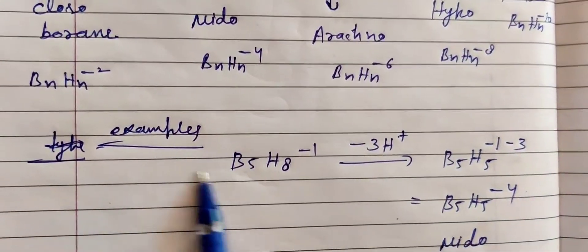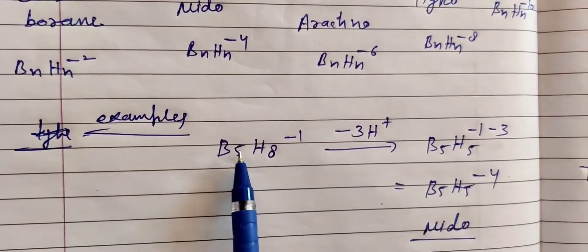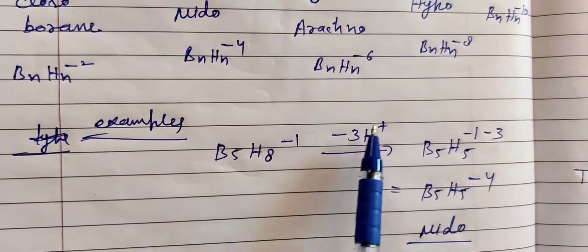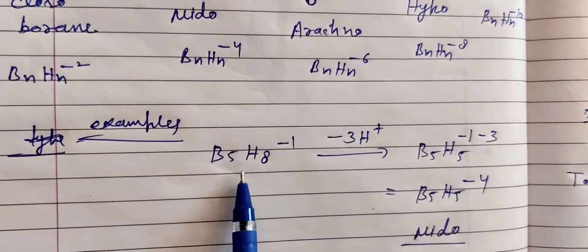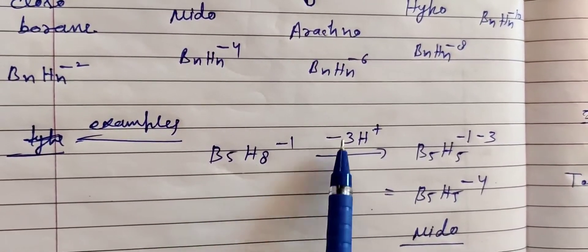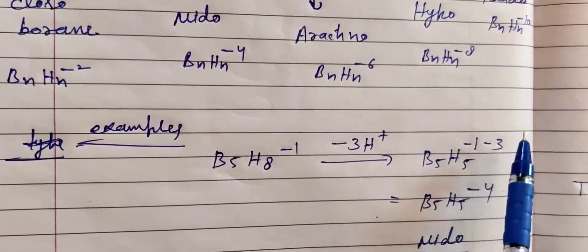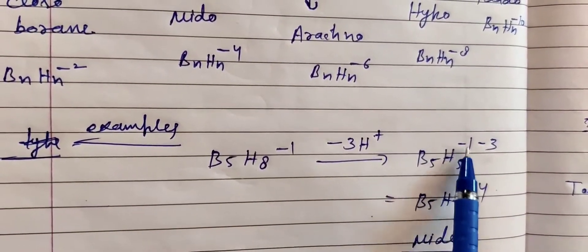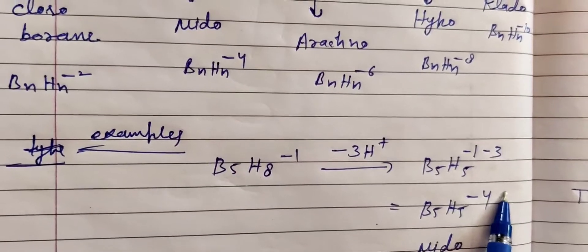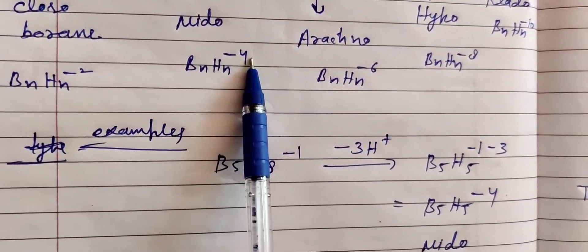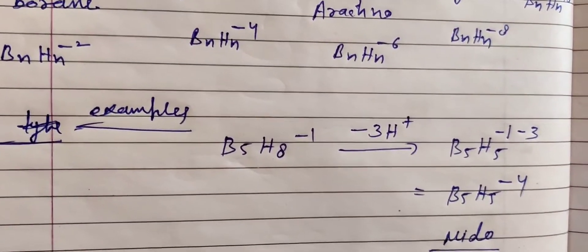Example: B5H8⁻¹. First, however many boron atoms there are, remove the extra hydrogens as H⁺. B5H8⁻¹ — remove 3 H⁺. For each H⁺ removed, add a minus charge. So B5H5 with minus 1 already, plus 3 more minus from removing 3 H = total charge minus 4. This matches BnHn₋₄, so the structure is nido type.